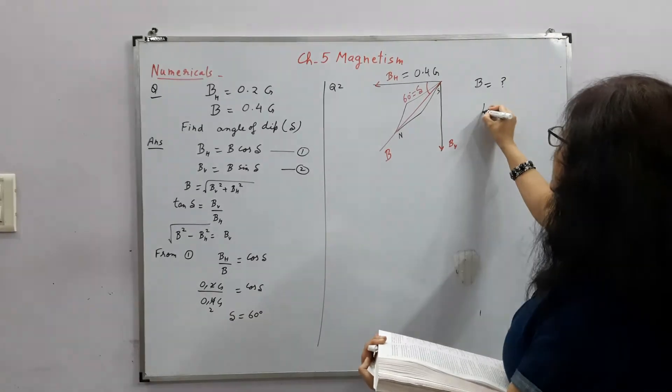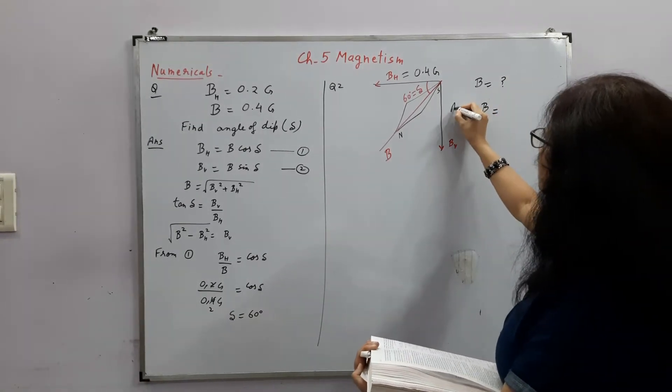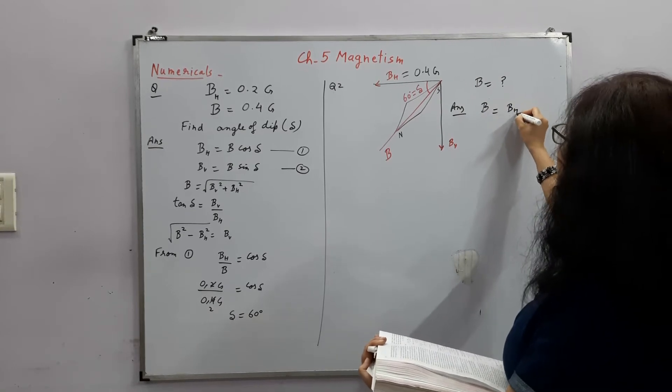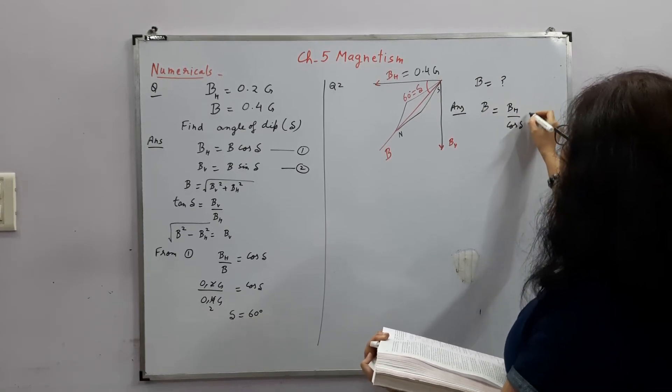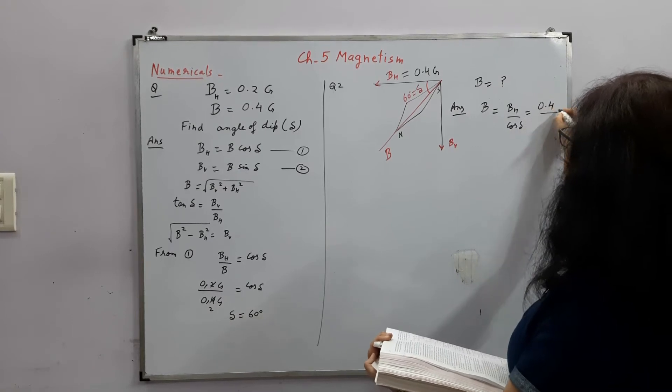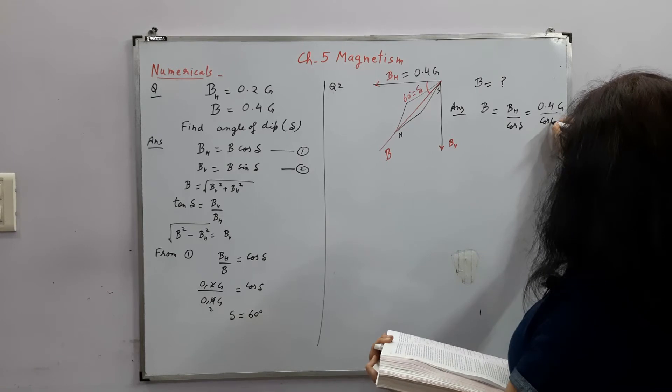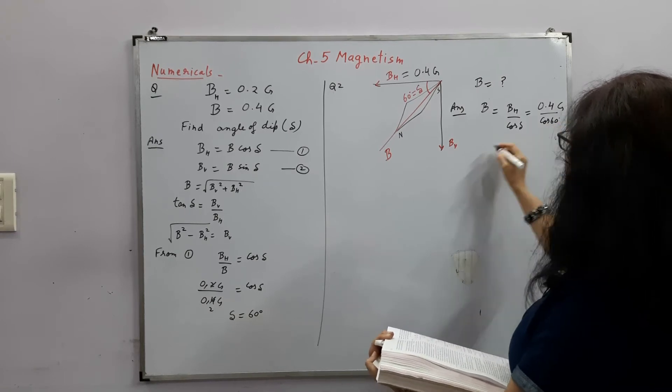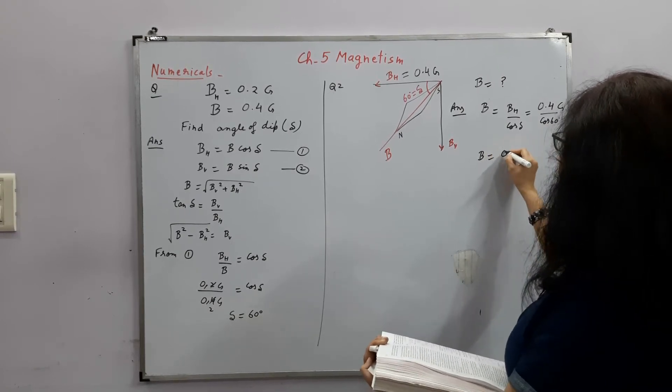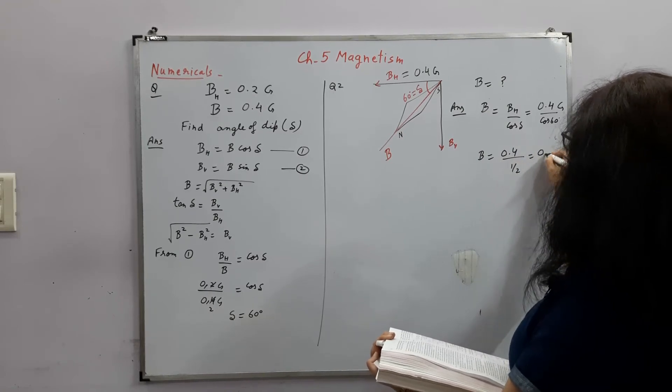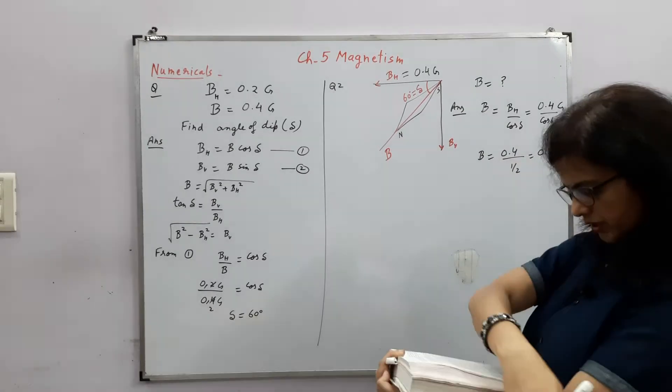So B is BH upon cos delta and BH is how much? 0.4 Gauss and cos 60. Right? So this will give you magnetic field is equal to 0.4 upon 1 upon 2. This gives me 0.8 Gauss.